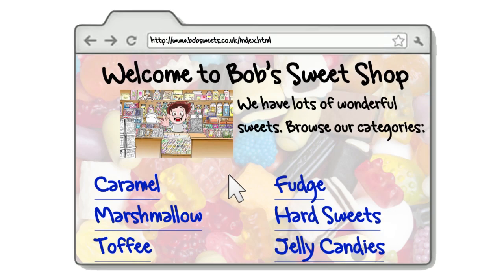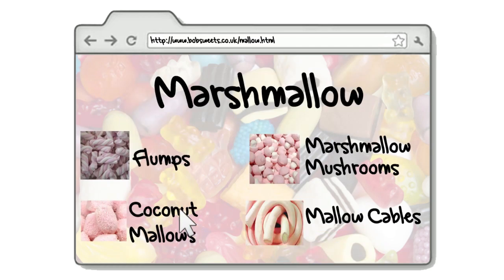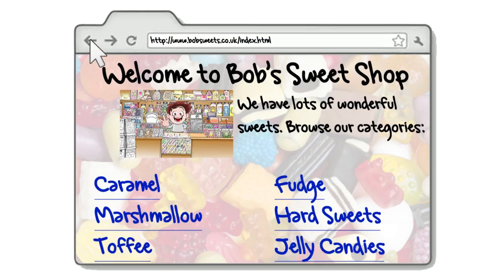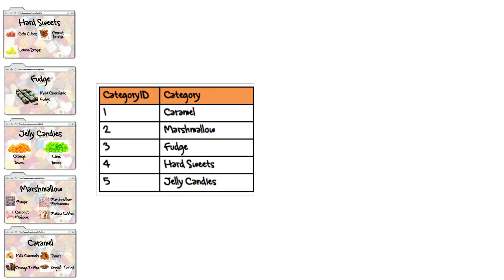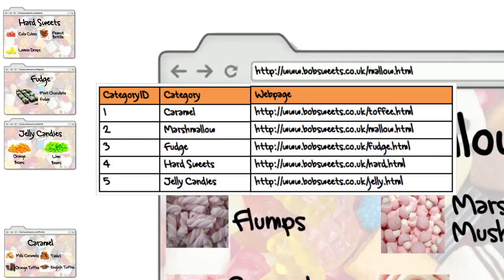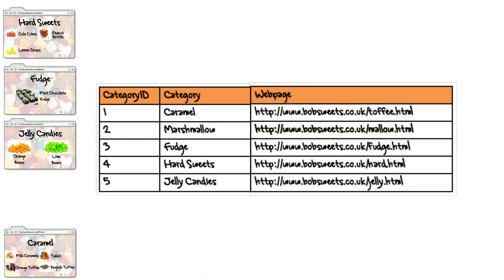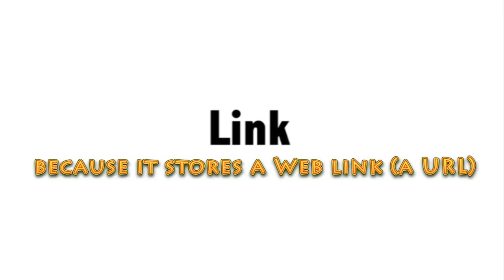Bob also has a website where he has a different page for each category. He can add a field to his category table to store the web address of each of these pages. A field that can store a URL, or uniform resource locator to give it the full name, is a field of type link because it stores a web link.